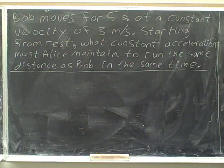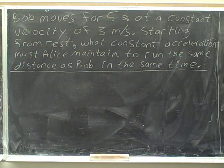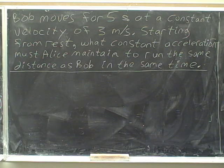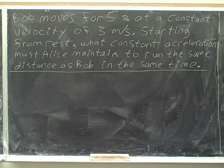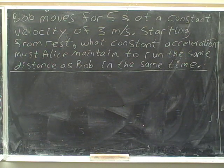Bob moves for five seconds at a constant velocity of three meters per second. Starting from rest, what constant acceleration must Alice maintain to run the same distance as Bob in the same time?